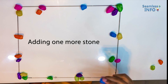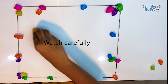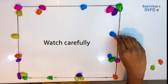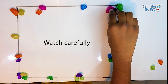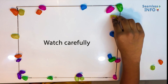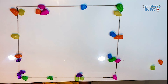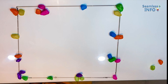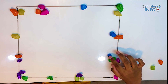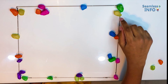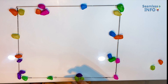Now I am going to add this blue stone here. And now I am going to move this yellow stone here and this orange stone here. Then I am going to change this orange stone here and move this pink stone here. Then I am going to take this purple stone here and put this yellow stone here. Then finally I am going to take this pink stone here. Now let us count how many stones are there in each side. On the left side we have 1, 2, 3, 4, 5, 6, 7, 8. On the right side we have 1, 2, 3, 4, 5, 6, 7, 8. On the top side we have 1, 2, 3, 4, 5, 6, 7, 8. And on the bottom side we have 1, 2, 3, 4, 5, 6, 7, 8.